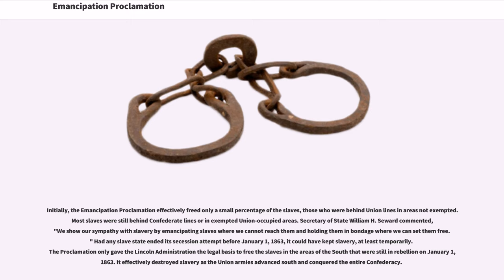Initially, the Emancipation Proclamation effectively freed only a small percentage of the slaves — those who were behind Union lines in areas not exempted. Most slaves were still behind Confederate lines or in exempted Union-occupied areas. Secretary of State William H. Seward commented, 'We show our sympathy with slavery by emancipating slaves where we cannot reach them and holding them in bondage where we can set them free.'